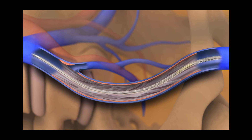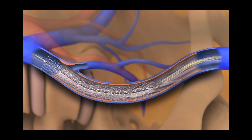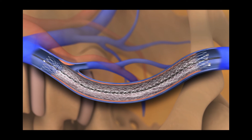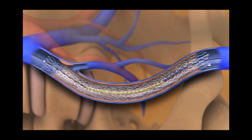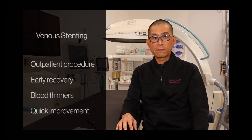After angioplasty is performed, an appropriately sized stent is inserted and deployed inside the blockage to keep the blockage from recurring. The most common stent that we use for this blockage is the Venovo stent, which is made by Bard Peripheral Vascular. After stent placement, the balloon is reinserted and post-dilated to keep the stent open. The entire procedure takes about 30 minutes and can be performed in an outpatient setting.